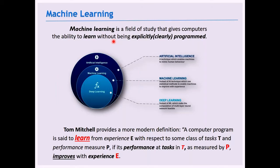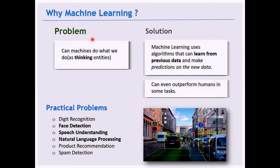Machine learning is a field of study that gives computers the ability to learn without being explicitly programmed. We do not hard-code all features or patterns in the data. Instead, we let the machine learn its own patterns. A modern definition: for any task T, the performance of a machine increases with experience. The machine learns from previous data and makes predictions on new data.